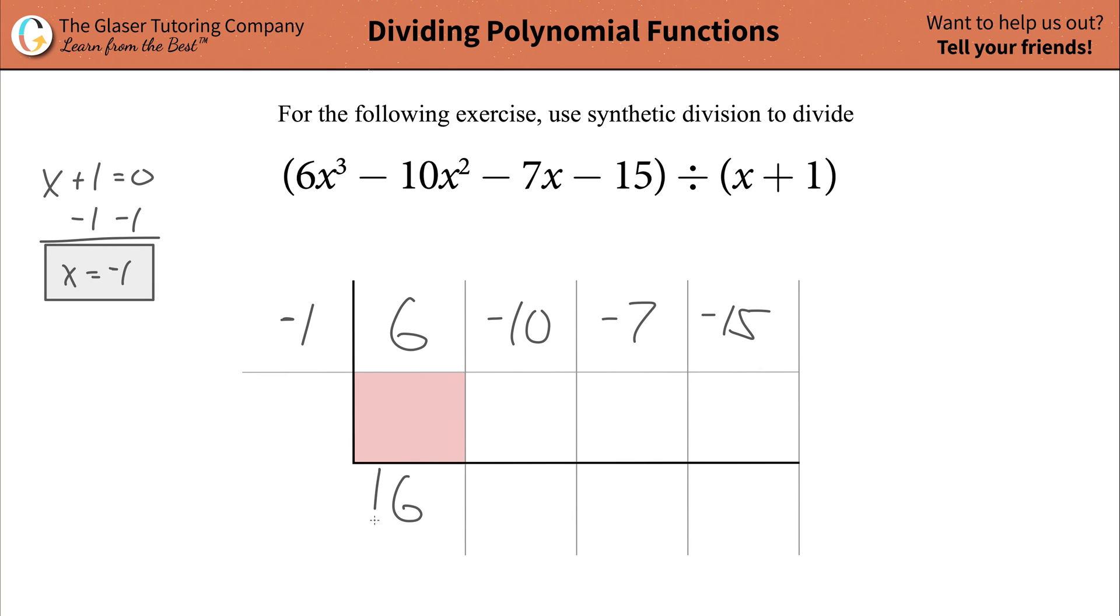Then what you're going to do is you're going to take this bottom term, multiply it by this term all the way on the left, and your answer is going to go into this next box right here. So negative 1 times 6 is going to be negative 6. Then you're going to add these terms together, and that's going to be negative 16. Fantastic.